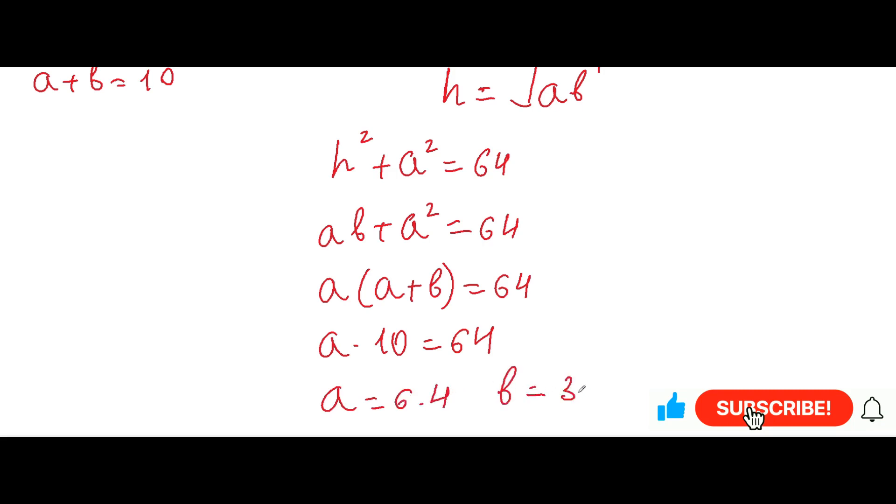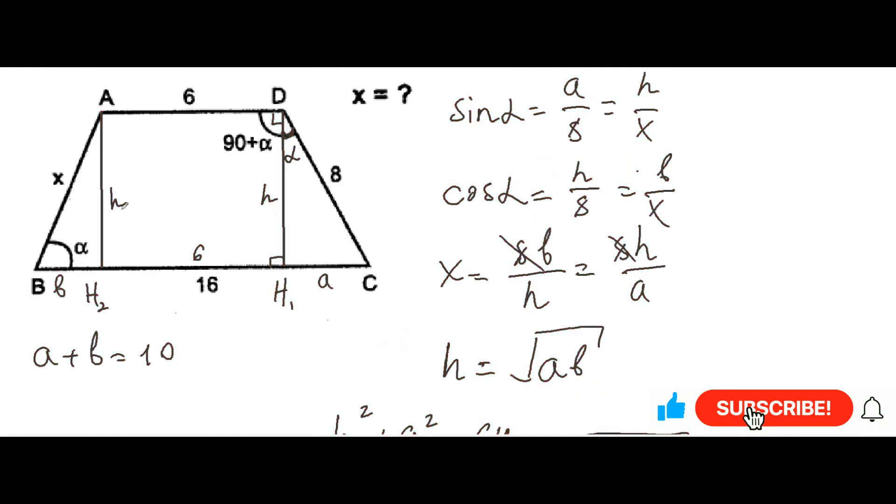Here b will be equal to 3.6, which means that x will be equal to 6. How is it so? Because we can plug into the Pythagorean theorems. Let me write down x squared will be equal to b squared plus h squared. And at the same time, 64 will be equal to a squared plus h squared.